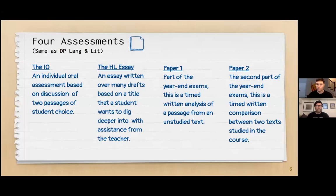There are four assessments over the two years of DP Literature. The first assessment, the I.O., takes place in the junior year. The HL essay takes place in the first semester of the senior year. And papers one and two are part of the year-end exams that students take at the end of their IB journey.